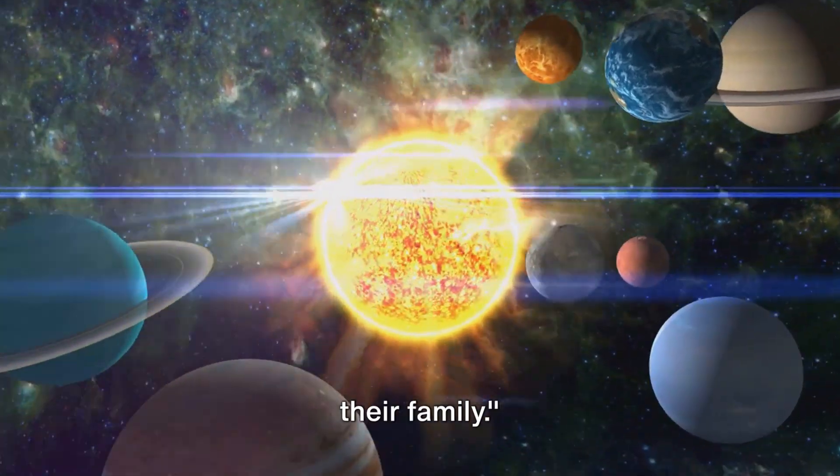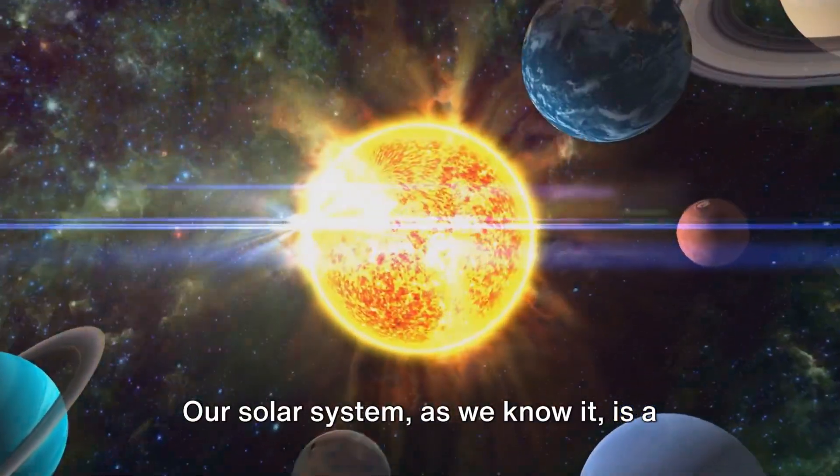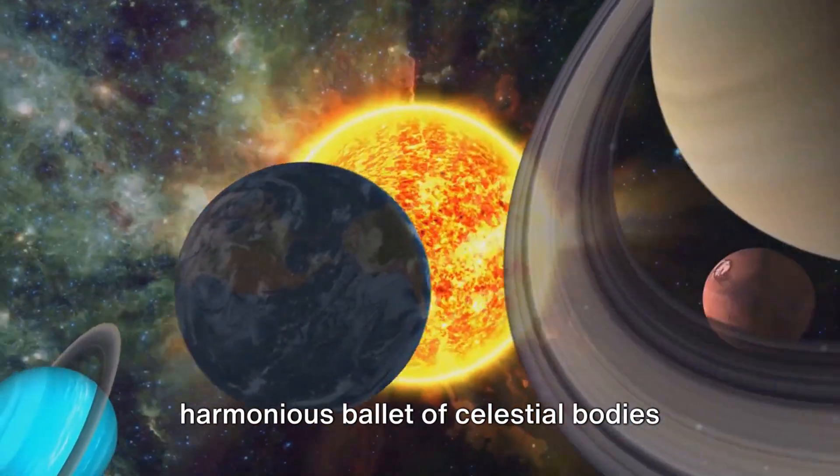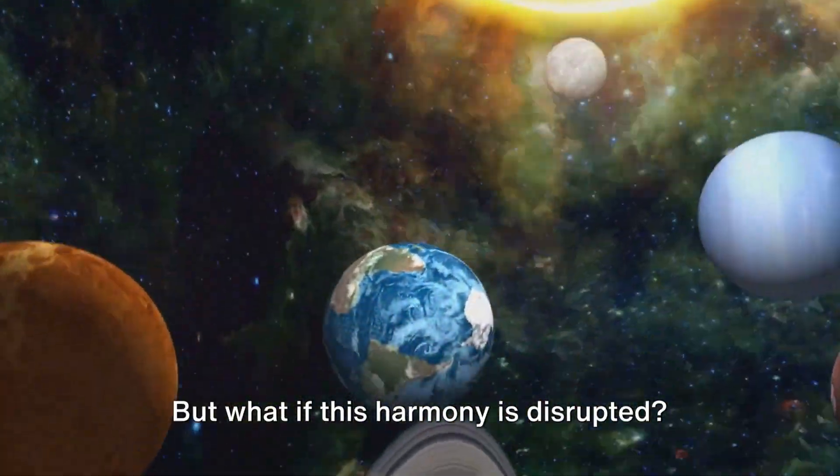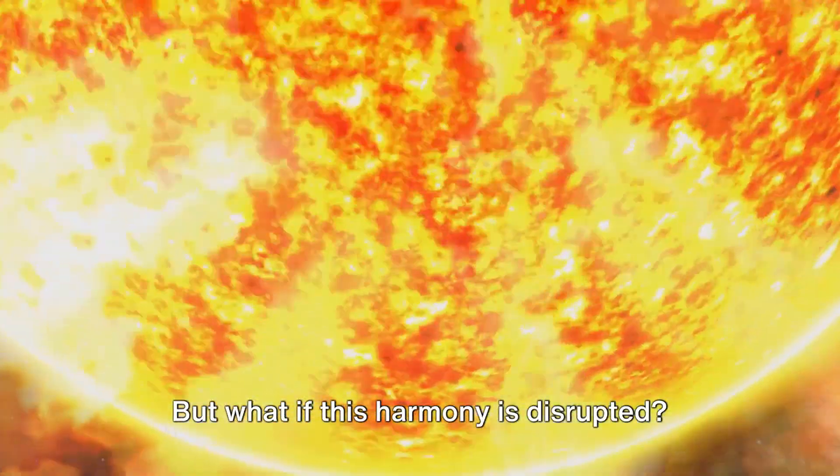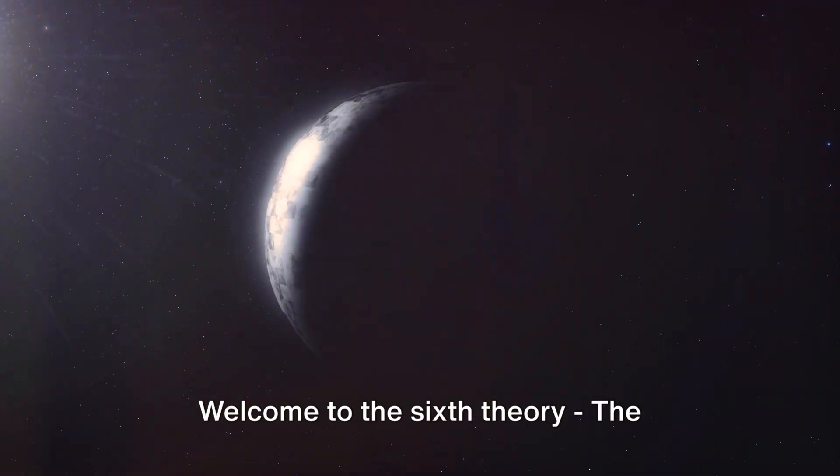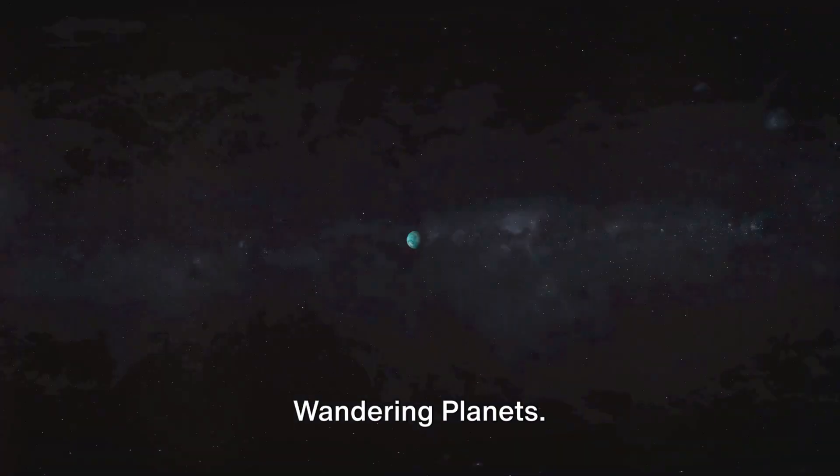Planets might not always stay within their family. Our solar system, as we know it, is a harmonious ballet of celestial bodies dancing to the tune of gravity. But what if this harmony is disrupted? Welcome to the sixth theory, the wandering planets.